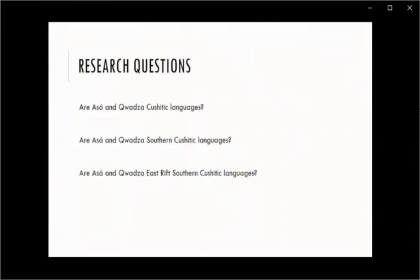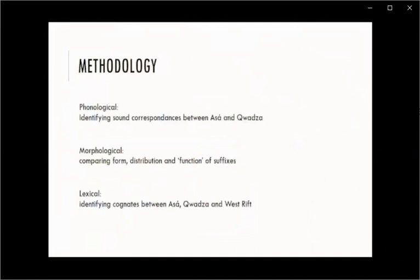Now on to what I want to research. There are three main questions: Are Asa and Kwadza Cushitic languages? Are they Southern Cushitic languages? And are they East Rift Southern Cushitic languages? I want to answer these by looking at phonological evidence — identifying sound correspondences — and by looking at the morphology present on the lexemes, comparing form, distribution and function, and lastly by looking at cognates between Asa, Kwadza, and West Rift.